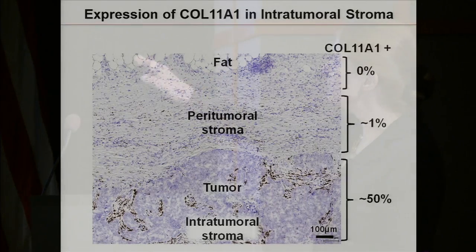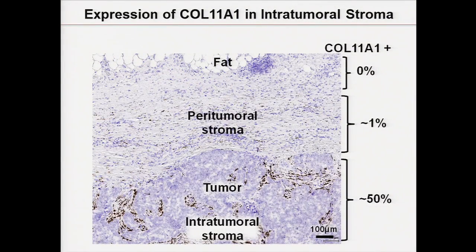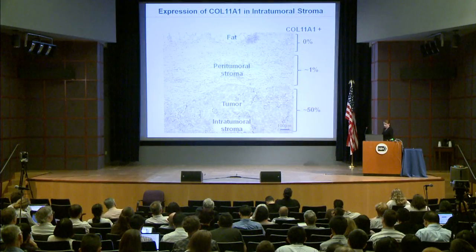One gene I'm specifically interested in is collagen 11A1, a very rare type of collagen we found was expressed very highly in tumor. In situ hybridization shows brown expression dispersed throughout the tumor, but in the peritumoral stroma you see very little of it, and more than one millimeter away from the tumor you don't see any collagen 11A1 — it's not expressed in normal stroma. What matters is a specific stromal subtype that expresses this collagen, usually inside the tumor, and we still don't know what it is about that stromal cell type.